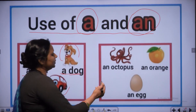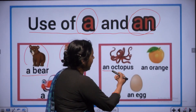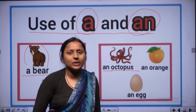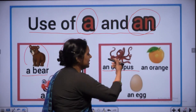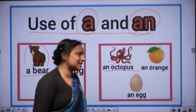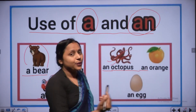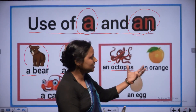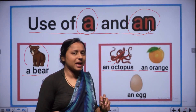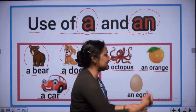Now use of AN. AN - O, C, T, O, P, U, S - octopus. This is octopus. AN octopus. AN - O, R, A, N, G, E - orange. This is the spelling of orange. AN orange.